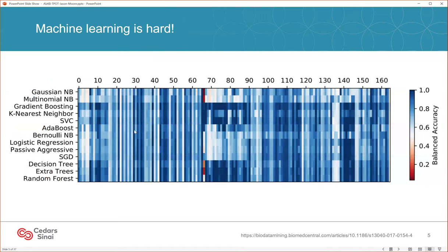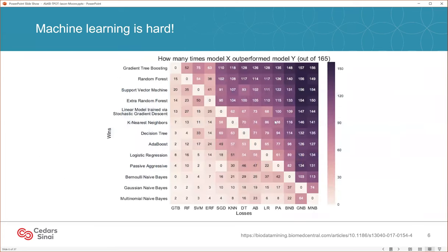This is a study we did a few years ago and published on more than 150 different data sets, doing a very comprehensive analysis across many different machine learning methods and parameter settings. What we found is that for some data sets all the methods did well, but for other data sets only certain methods did well. There's tremendous variability in the performance of machine learning algorithms, and no one machine learning algorithm was ideal for every data set. Even the simplest methods such as Naive Bayes performed optimally on certain data sets.